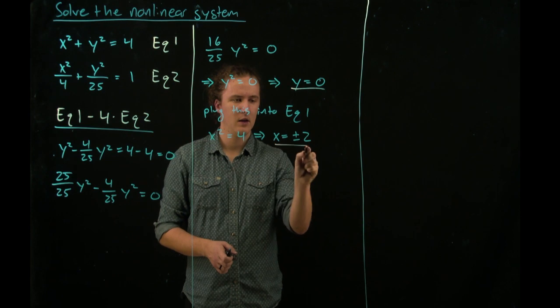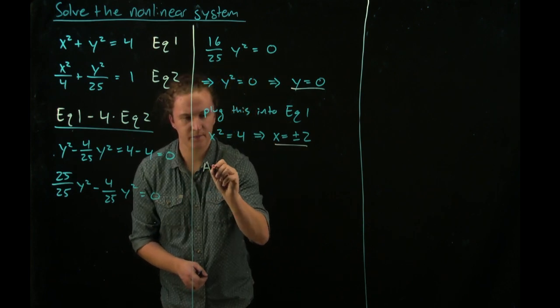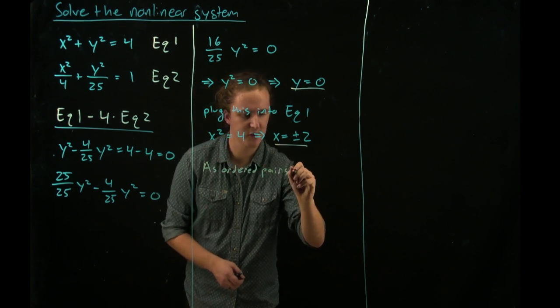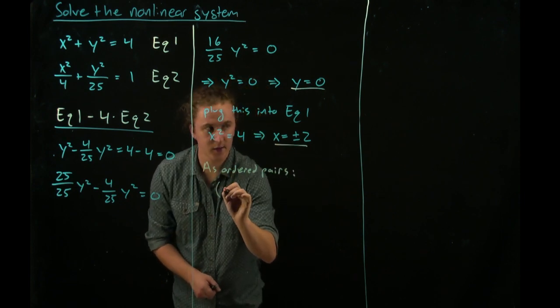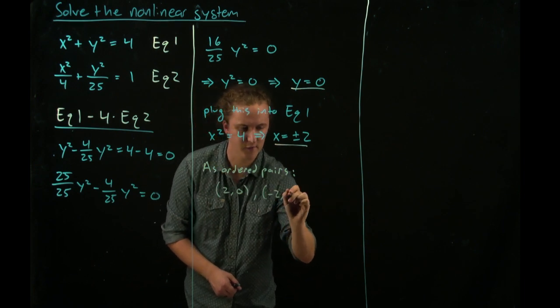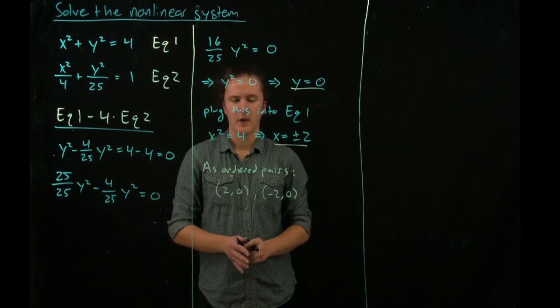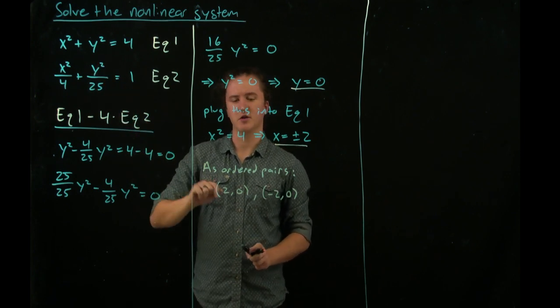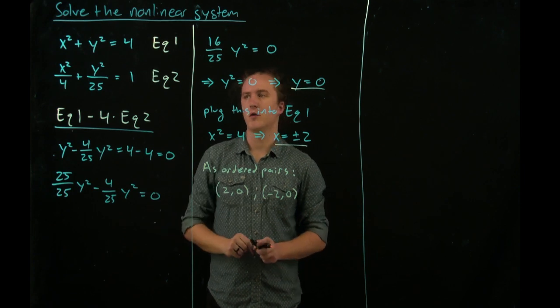So as ordered pairs, we end up with two solutions: the point 2, 0 and the point negative 2, 0. We can easily check that these are both solutions by plugging both of these into both equations, and you will see that both work.